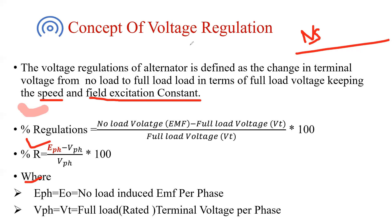The alternator is operated in three modes: unity power factor, lagging load, and leading load. These modes depend upon the excitation. If excitation is very high, the alternator operates at leading load. If excitation is very low, it operates at lagging load. If the armature current and terminal voltage are in unity phase, that is unity power factor. So field excitation defines whether the alternator operates at lagging, leading, or unity power factor — that's why speed and field excitation must be constant to check voltage regulation.